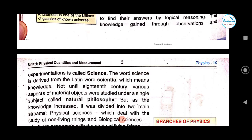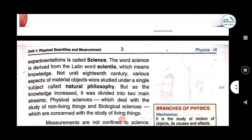The knowledge we gain by conducting experiments and observing things — that is totally science. The word 'science' is derived from the Latin word 'sentia,' which means knowledge. So the meaning of science itself is knowledge. You gain that knowledge in two ways: either through observation or through experimentation.